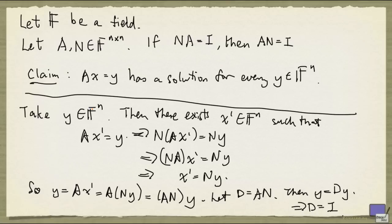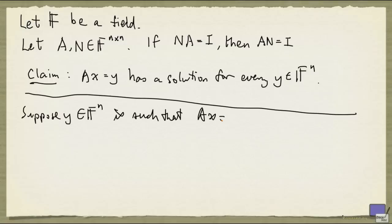So now we have to prove this claim. Suppose that for some y in F^n, the system Ax' equal to y has no solution. What we do now is we row reduce the augmented matrix A, y to R, d, where R is in reduced row echelon form.